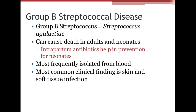Group B strep is caused by Streptococcus agalactiae and can cause death in adults and neonates. All pregnant mothers are tested for this around 34 to 37 weeks of gestation. If they test positive, they usually don't know they have it, and it can cause the baby to develop meningitis. If positive, antibiotics are given during labor to prevent transmission.